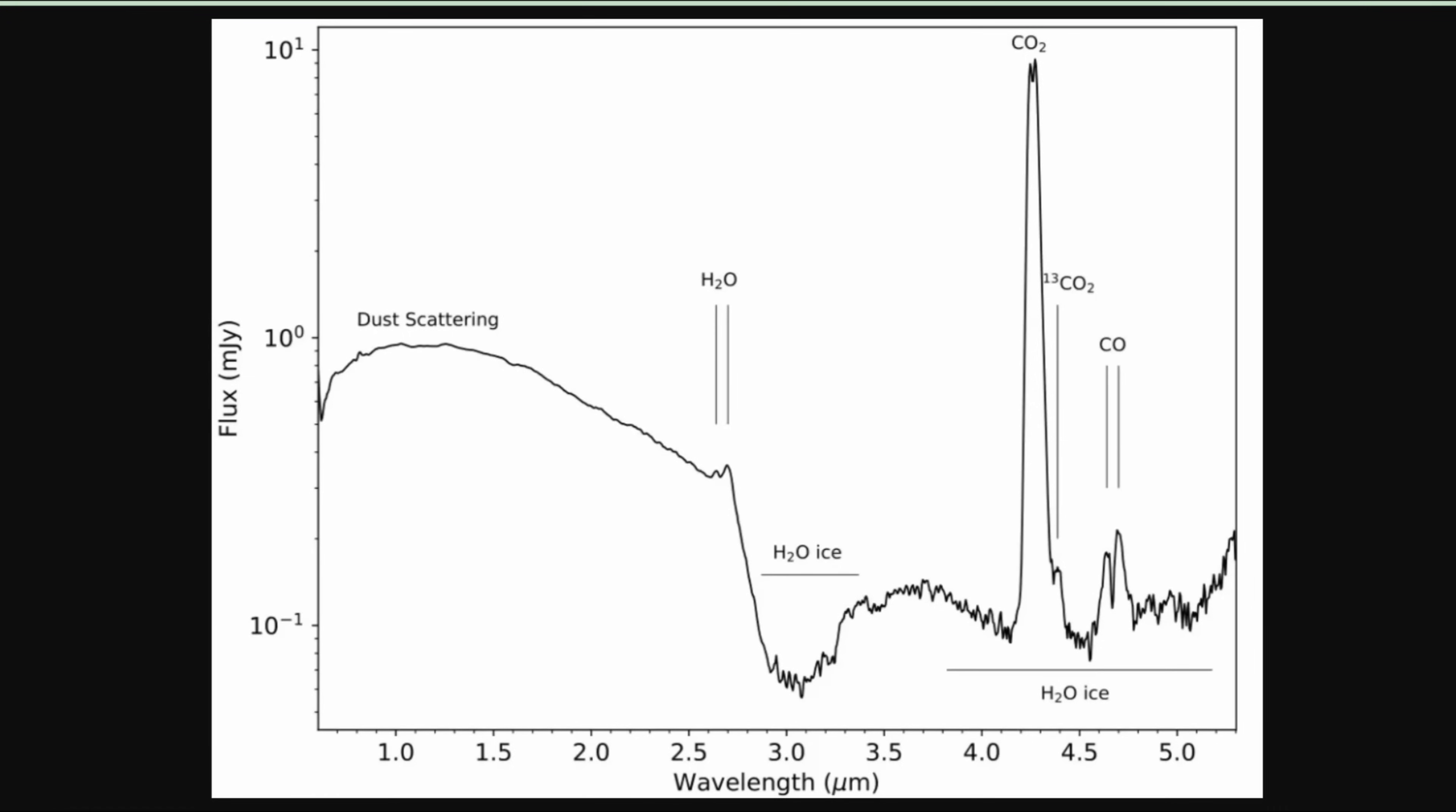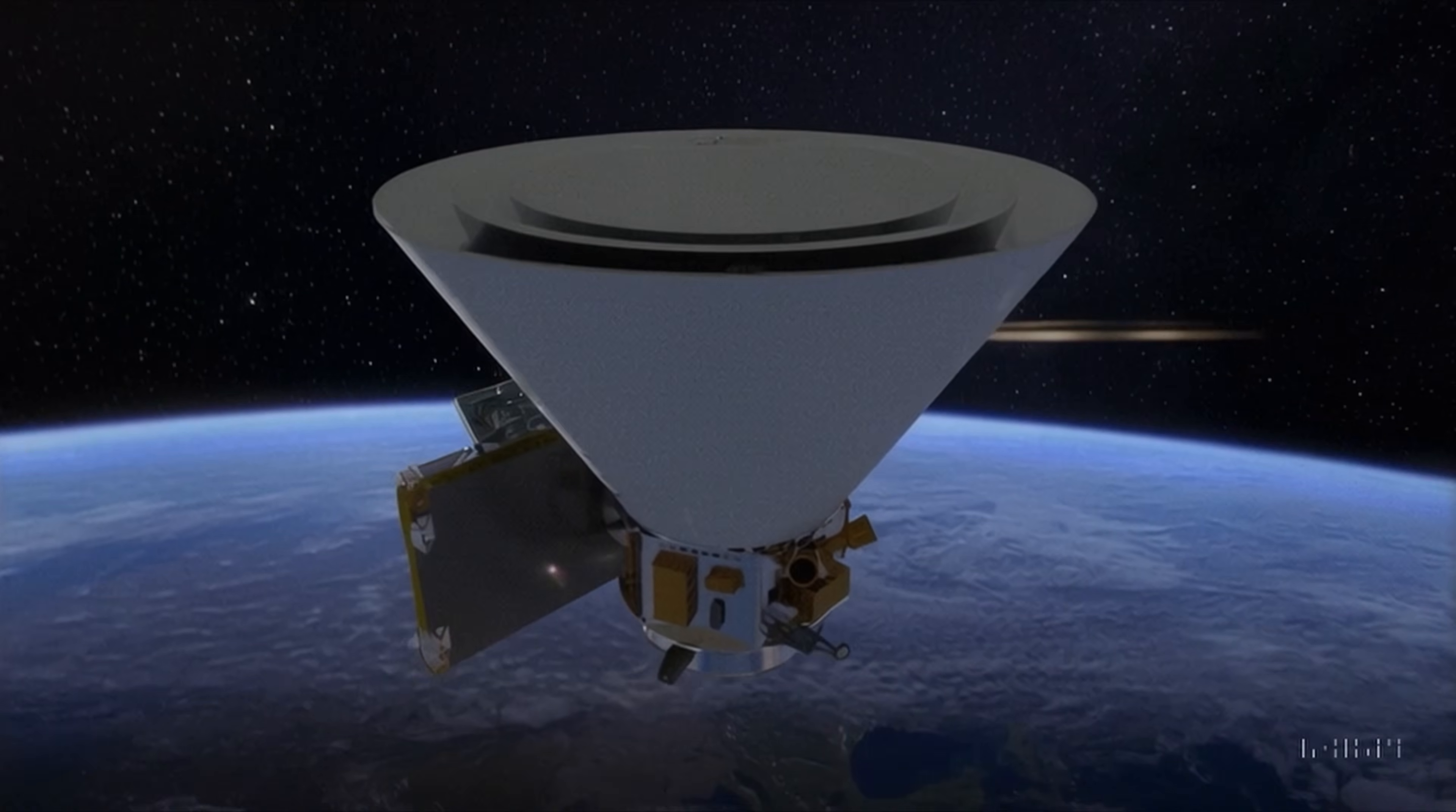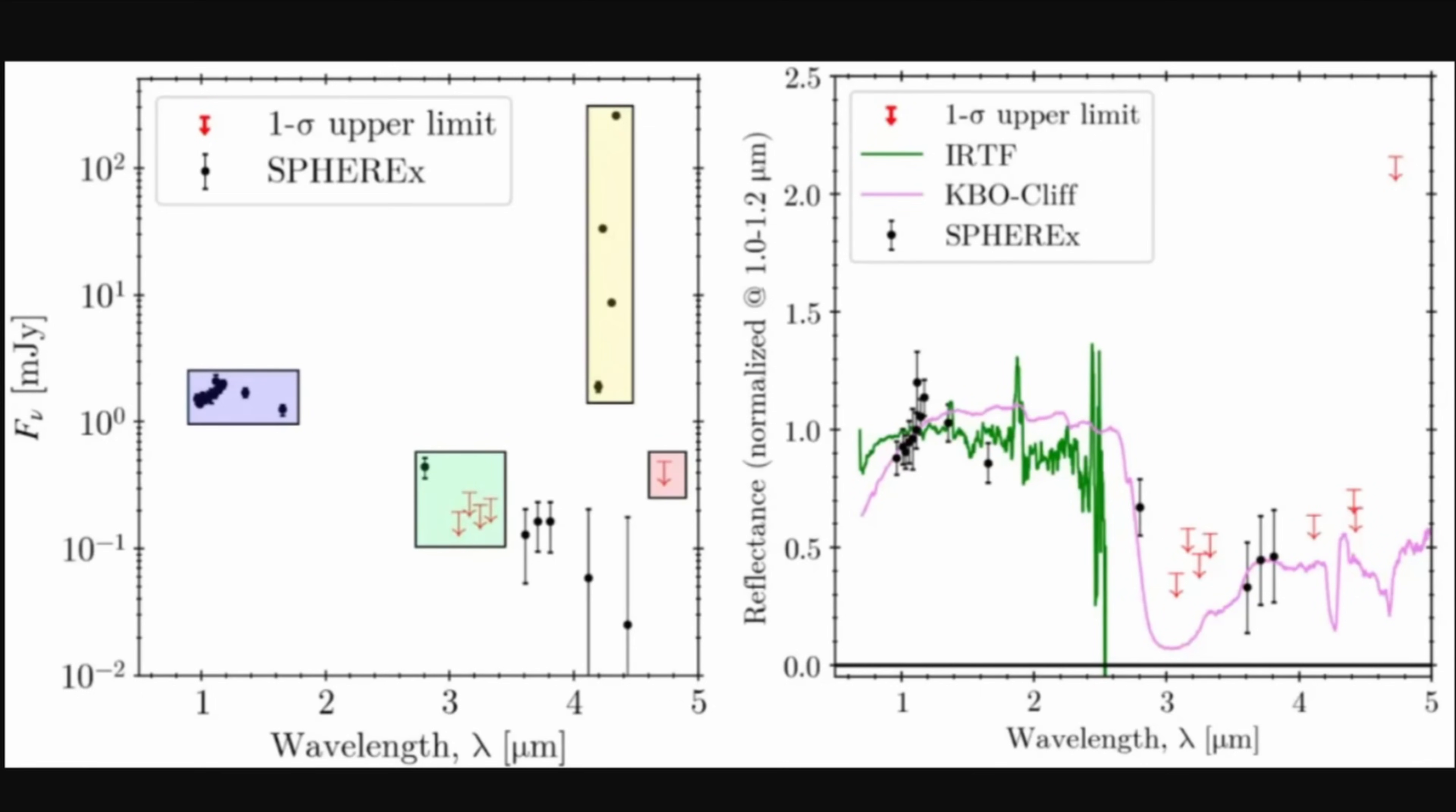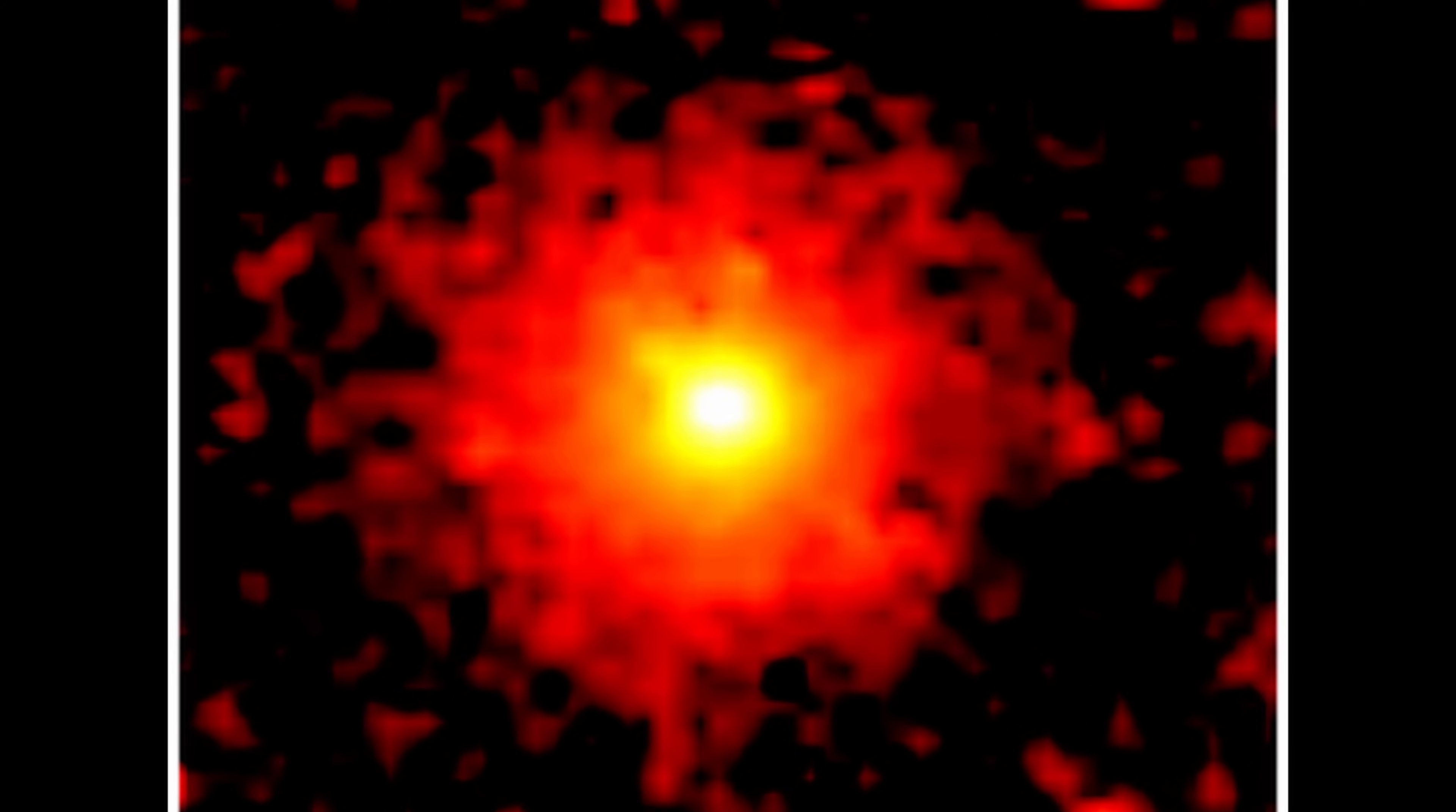It overwhelmed water by a factor of 8 to 1. This ratio is extraordinary. It lies six standard deviations outside the norm for solar system comets. In statistical terms, that's so far beyond expectation that the odds of it being coincidence are virtually zero. SPHERE-X, NASA's latest space telescope, confirmed the result. It imaged a vast carbon dioxide coma stretching hundreds of thousands of kilometers across, while water and carbon monoxide were weak or absent. The profile was unmistakable—a carbon dioxide dominated object unlike any comet we've seen before.